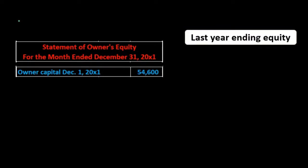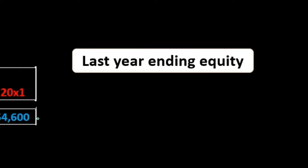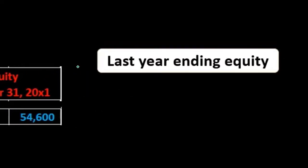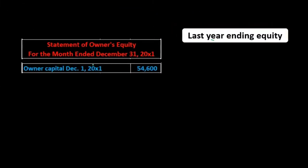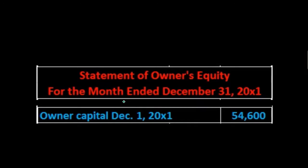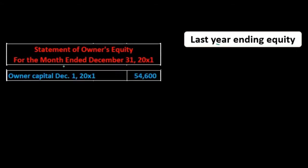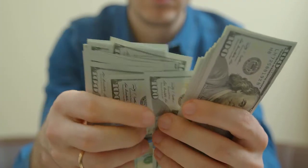Looking at a simple statement of equity, we start with the beginning balance. Note the date: 'for the month ended December 31st,' meaning the month begins December 1st and ends December 31st. We take last period's ending equity — the owner capital account beginning at $54,600. Where do we get that number? We could look at the prior month — in this case November — since we're reporting for a monthly time period.